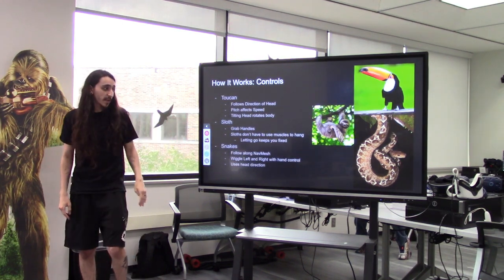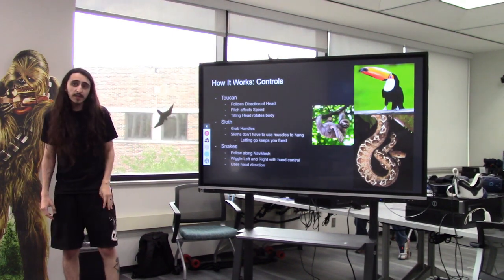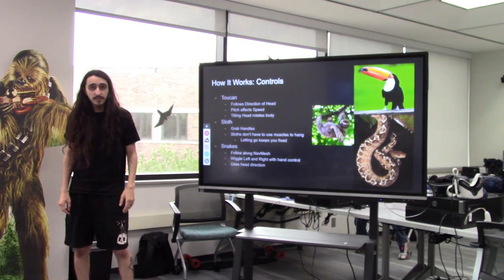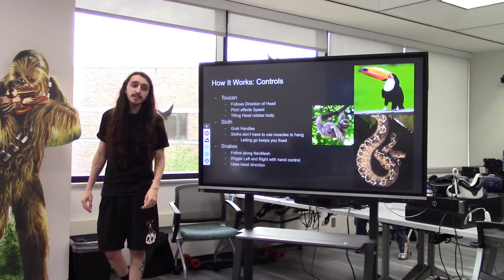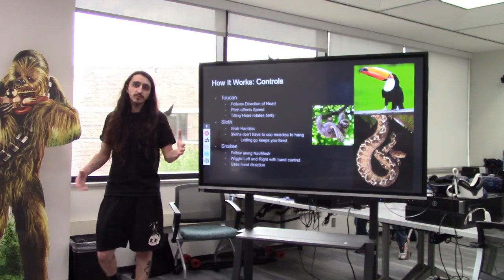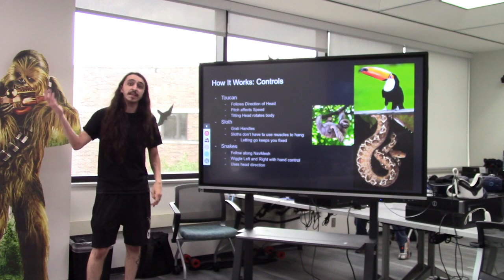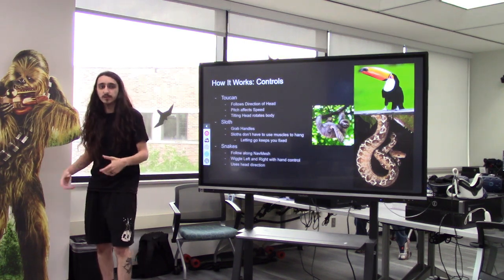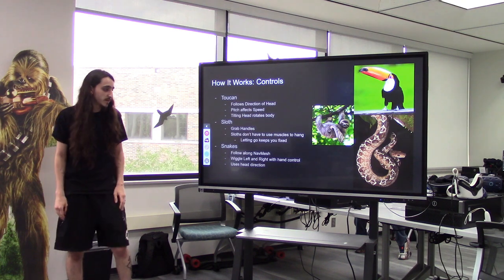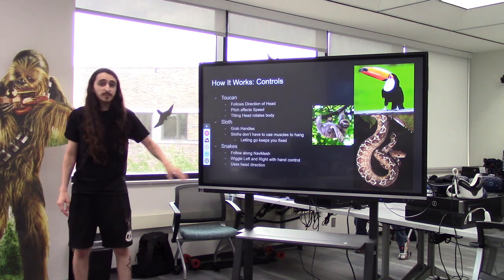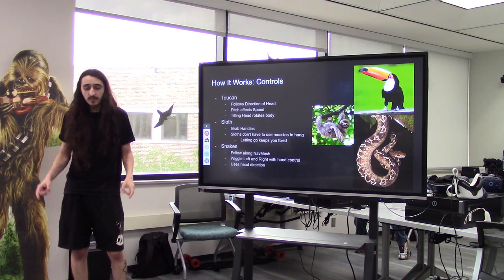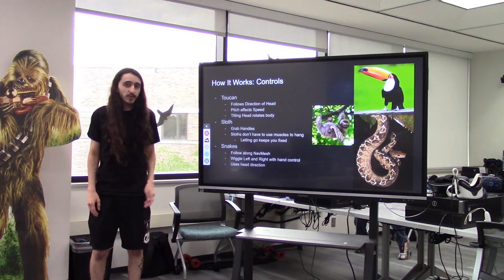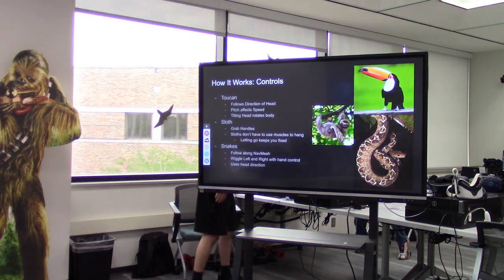The toucan head-tilt control is probably my favorite. The sloth works much like many other VR grab systems, where you can grab onto trees in order to climb them. A fun fact about sloths: they actually don't have to use their muscles to hang — sloths will often stay hanging in trees even after they die because their muscles don't need to be activated. So part of the sloth control scheme includes not having to stay gripped to stay up on a tree. Snakes are the simplest form — they follow the nav mesh, and you use the triggers to project yourself through the environment. All animals use some form of head tracking to get orientation and direction, since that's fairly reliable.